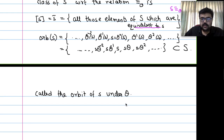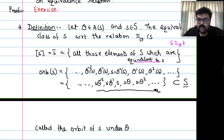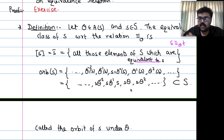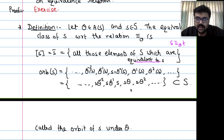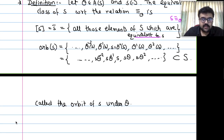If S is a finite set, there will be repetition — the sequence s, theta(s), theta^2(s), ... cannot go on indefinitely. So there exists some integer L such that theta^L(s) = s. This leads to the following exercise for finite sets.